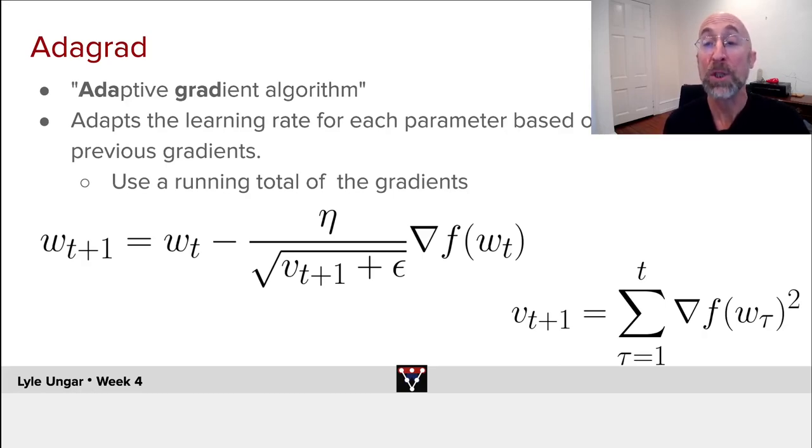What does that mean? If this weight has been changing a whole bunch, then divide by, on average, how big it's been, and make it smaller. If this weight has been changing very, very little, maybe we haven't seen this parameter, this picture before, this weight's hardly been changed.